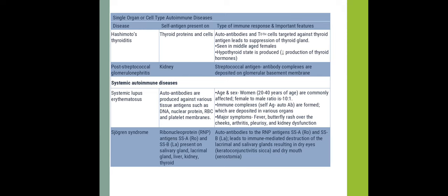Sjögren's syndrome: self-antigens are ribonucleoproteins such as SSA and SSB, presented in salivary glands, lacrimal glands, liver, kidney, and thyroid. Auto-antibodies to these ribonucleoprotein antigens lead to immune-mediated destruction of the lacrimal and salivary glands, resulting in dry eyes and dry mouth.